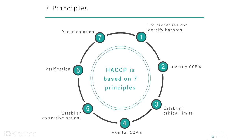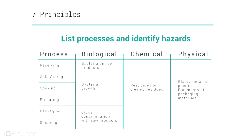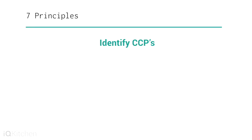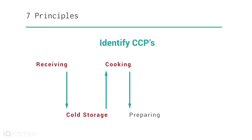Principle 1: Conduct a hazard analysis. The application of this principle involves listing the steps in the process and identifying where significant hazards are likely to occur. Principle 2: Identify the critical control points. A critical control point (CCP) is a point, step, or procedure at which control can be applied and a food safety hazard can be prevented, eliminated, or reduced to acceptable levels.